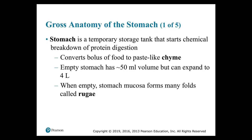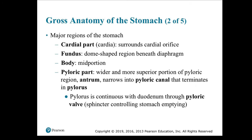The stomach is a temporary storage tank that starts chemical breakdown — specifically protein digestion — and converts the bolus into a paste-like chyme. An empty stomach has about 50 mL of volume but can expand to four liters. When empty, the stomach mucosa forms many folds called rugae. The major regions are: the cardiac part, which surrounds the cardiac orifice; the fundus, dome-shaped beneath the diaphragm; the body, the mid-portion; and the pyloric part. The antrum narrows into a pyloric canal terminating in the pylorus, which is continuous with the duodenum through the pyloric valve.